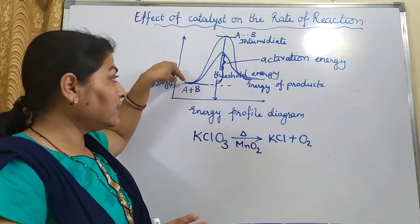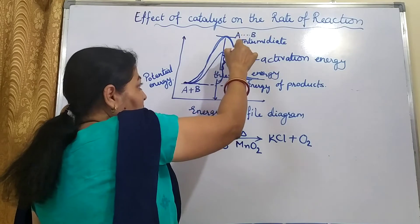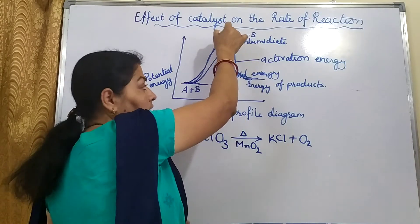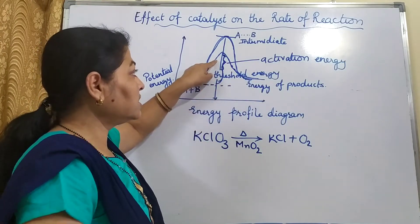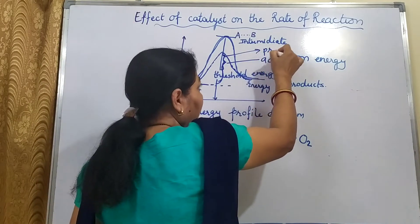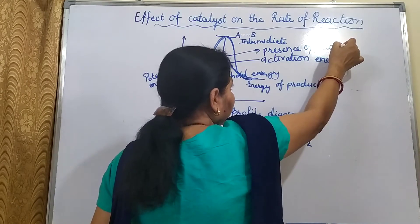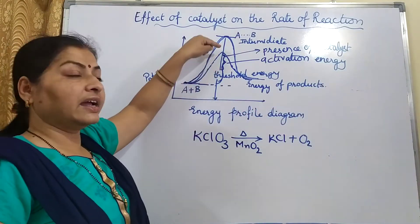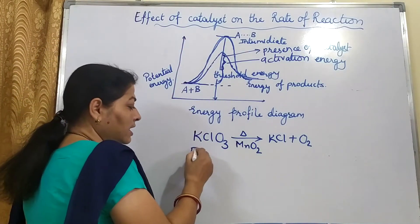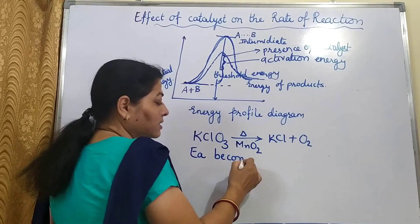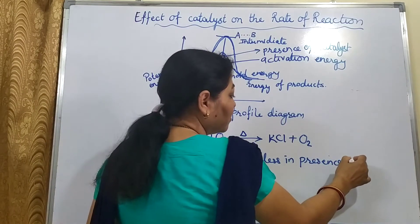The activation energy will get lowered in the presence of a catalyst because the catalyst holds the reactant molecules on its surface, making the reactant molecules fixed. They will require less energy to react with each other or to form the intermediate in order to get converted into the products. The catalyst provides an alternative path — without catalyst it is a higher activation energy path, and with catalyst it is a lower activation energy path. So in the presence of a catalyst, the reaction takes place faster because Ea becomes less.